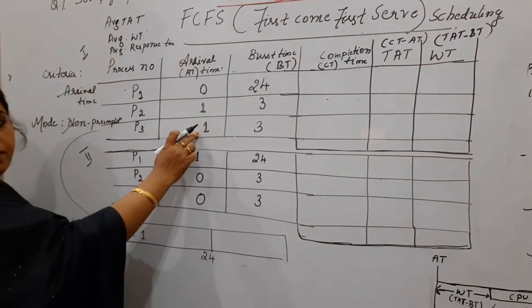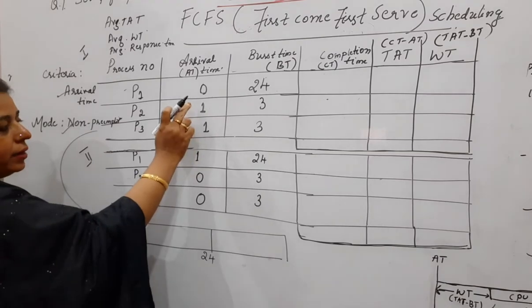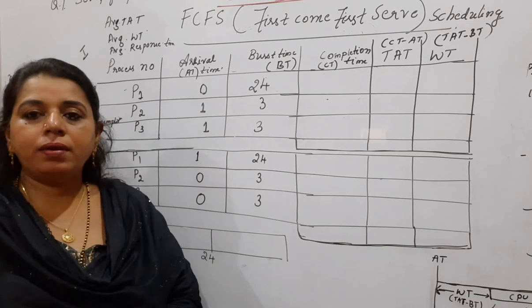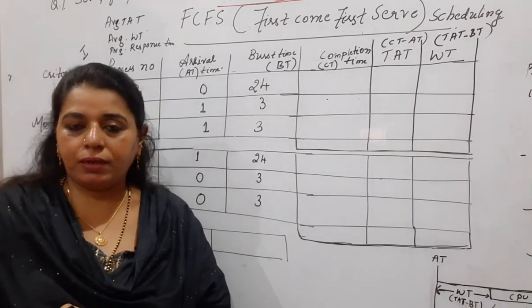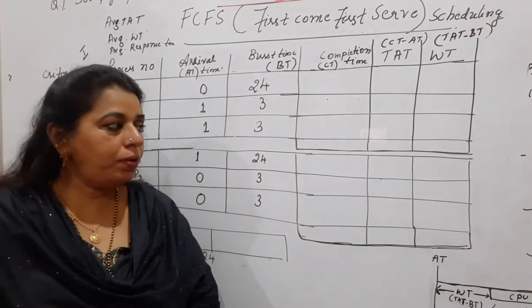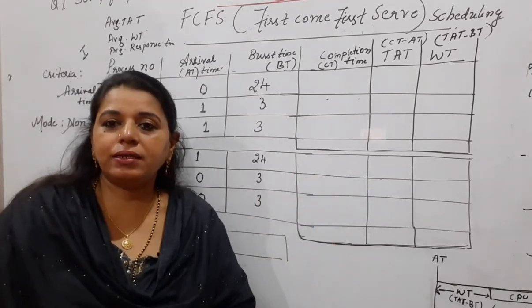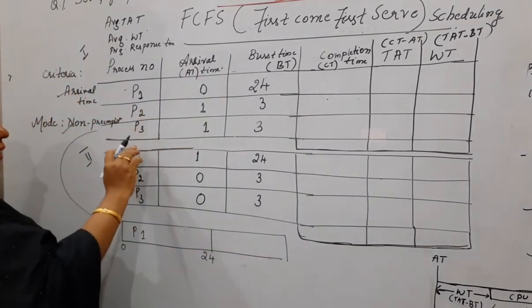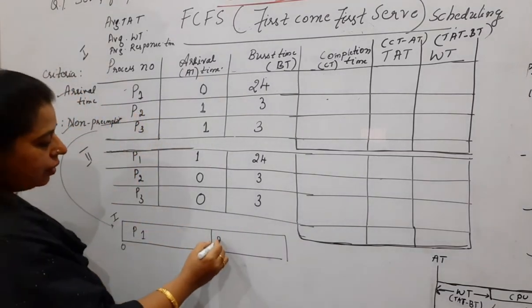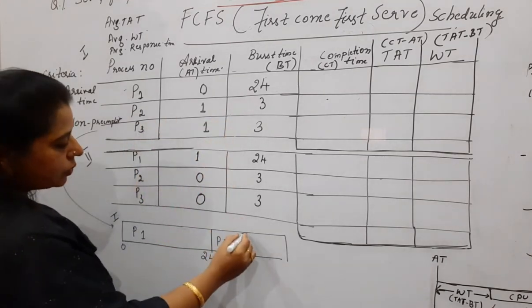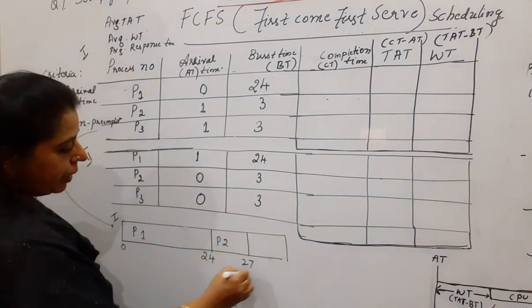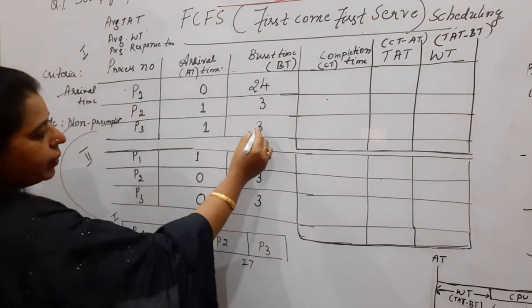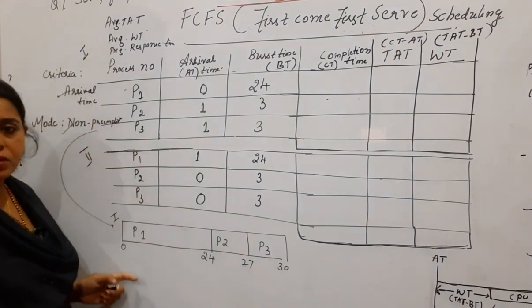Next, see the arrival time is 1. At this point of time, two processes are already there in the queue. That means at time 1, P2 is also there and P3 is also there. What do you have to do? In case of a tie, the process with smaller ID is executed first. So here there is a tie. The process with smaller ID will be taken. P2 will get its chance first and it needs only 3 units. So it will complete its job at 27. Next P3 will be the process that gets scheduled. It requires 3 units. So it will complete its job.